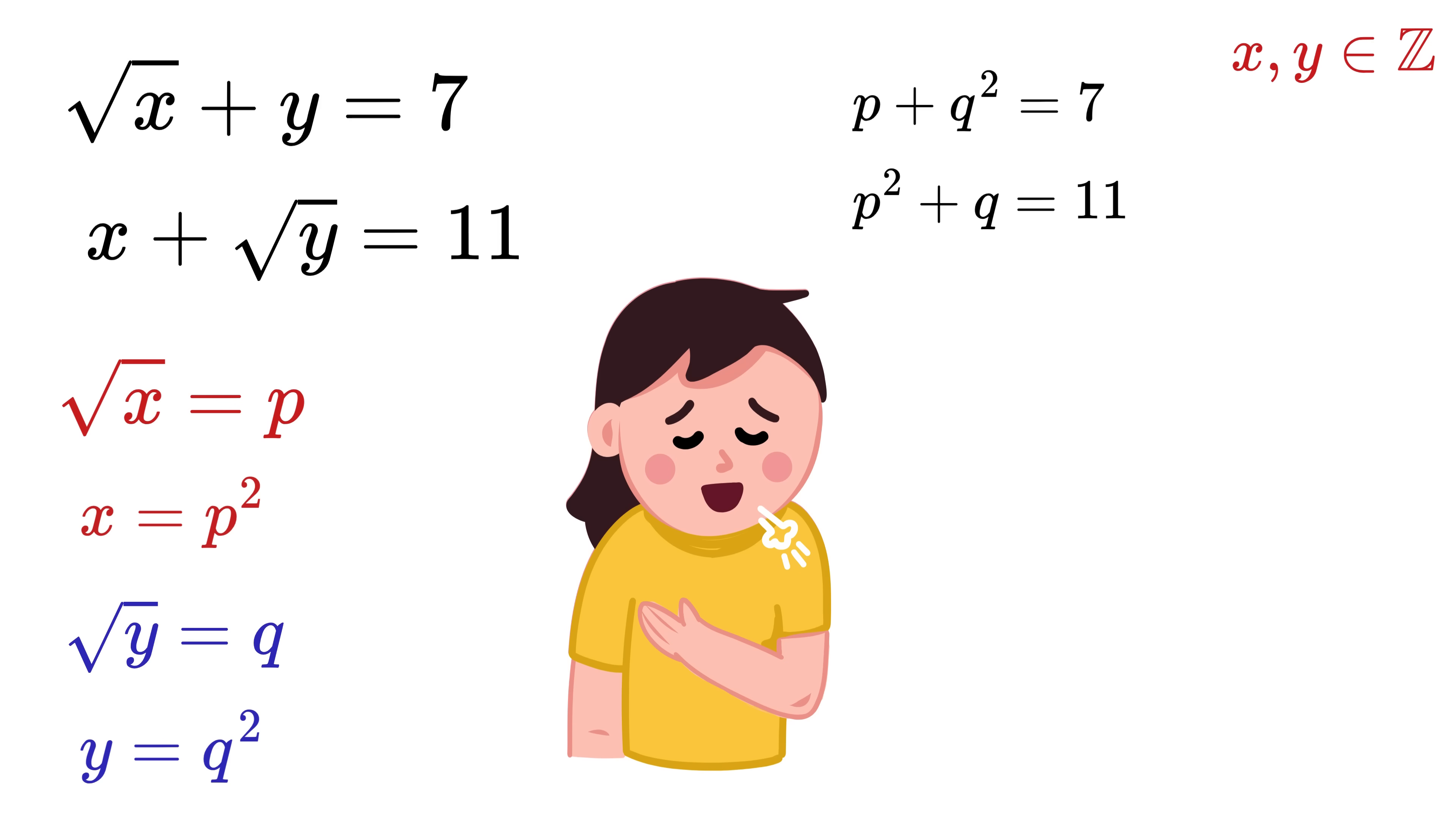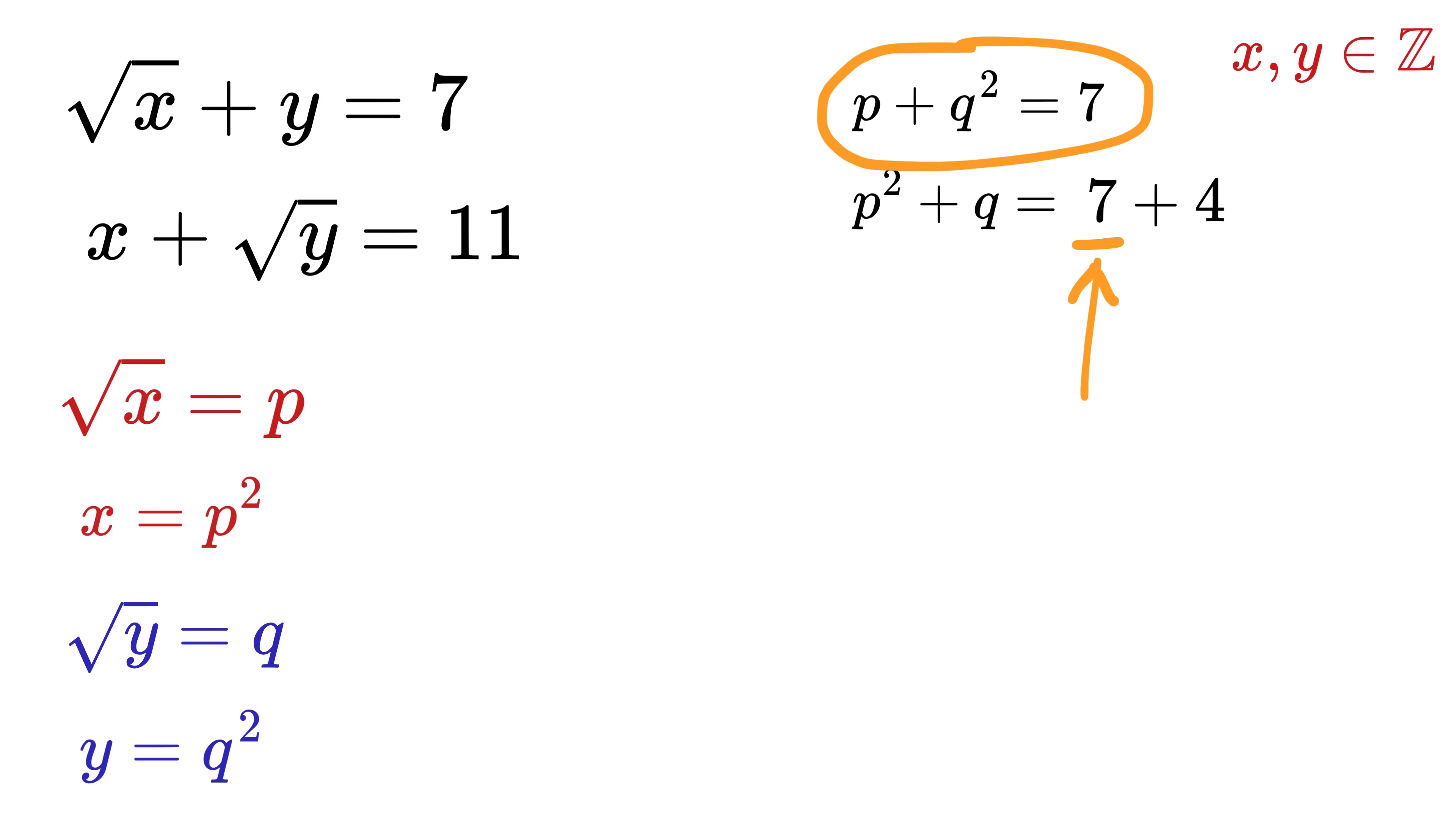Now it feels so relaxed when the square roots are all gone. Next, we can rewrite this 11 as 7 plus 4, right? Oh wait, actually this expression is equal to 7, and thus we can write here (p plus q)² instead of 7. Now take both p² and q on the left side of this equation: we get p² plus q minus (p plus q)² equals 4.